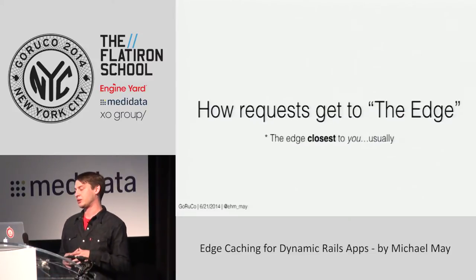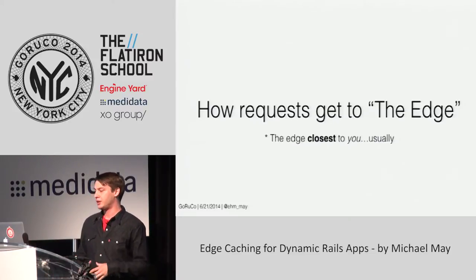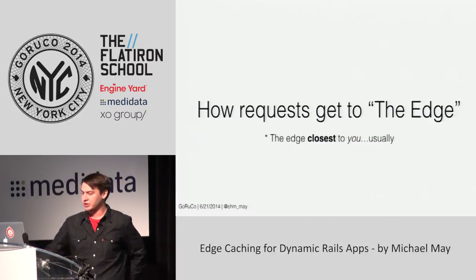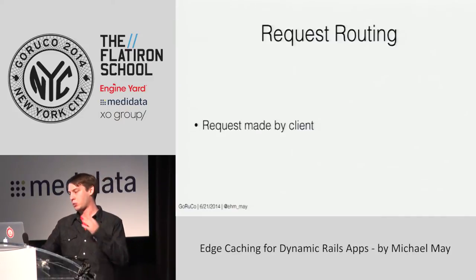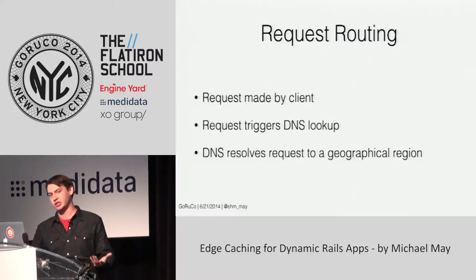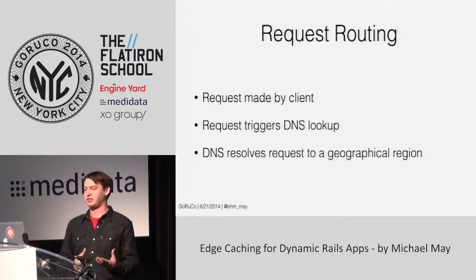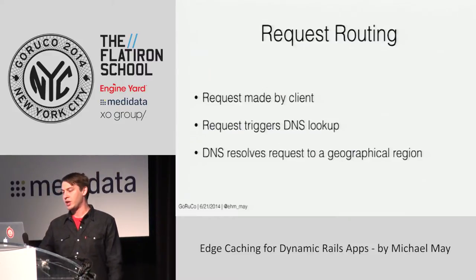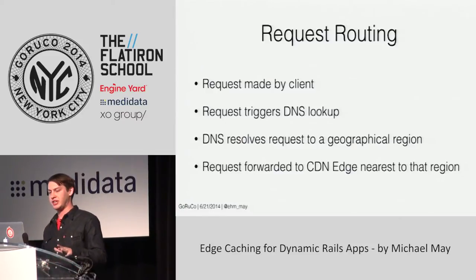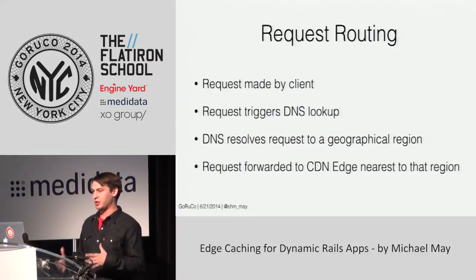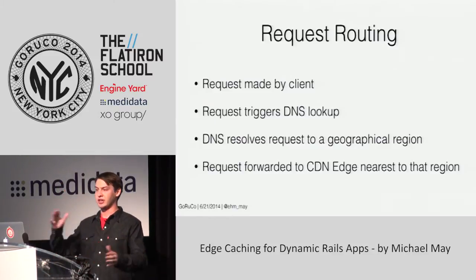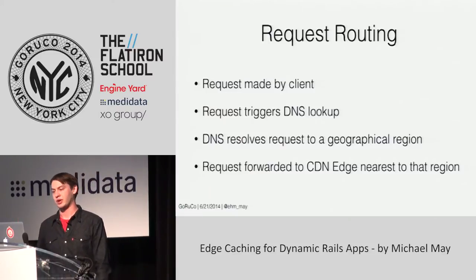When requests are routed, they're usually routed to the edge closest to where you are located. When the client makes a request, it triggers a DNS lookup, and DNS will resolve this request to a specific geographical region and then forward that request onto the CDN edge. This is a pretty high-level view, but it gives you a good idea of how those requests are routed.